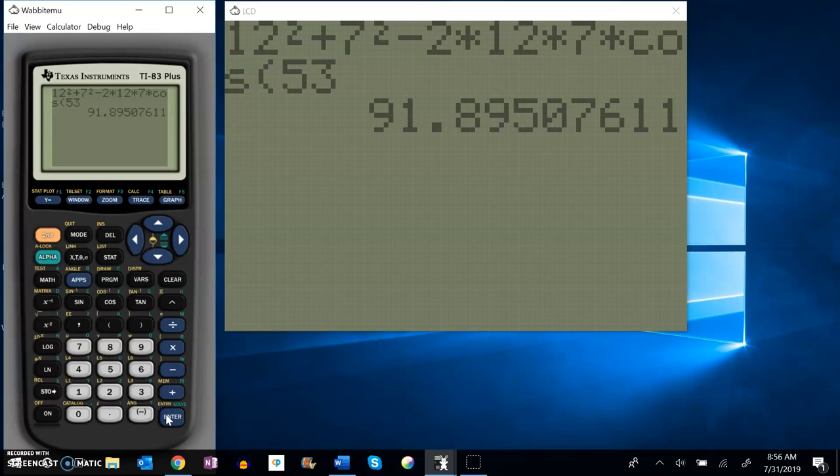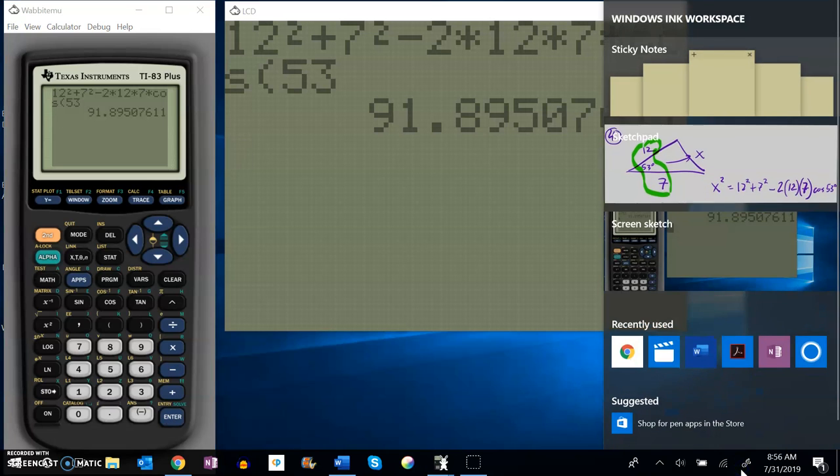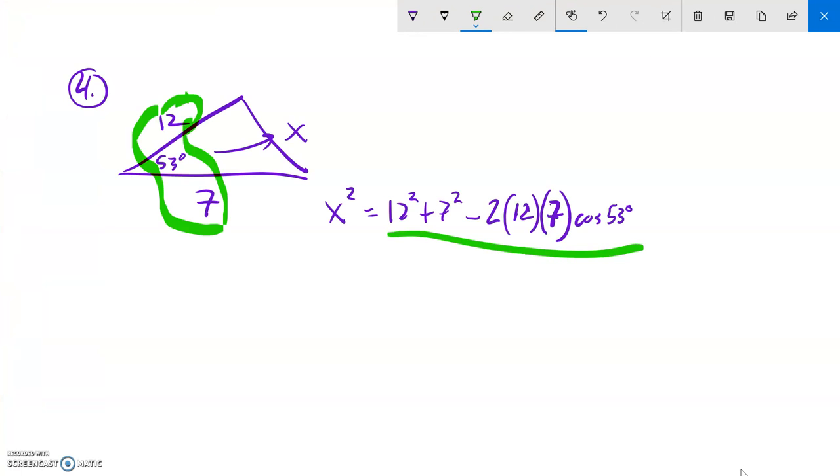Great, and I get about 91.895. So this whole thing evaluates to 91.8 something 5. But notice that's not my answer. That's what x squared is.